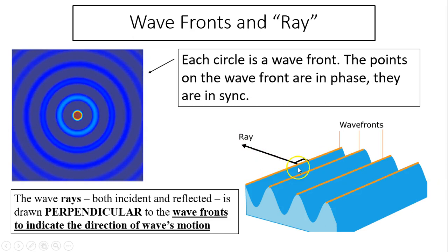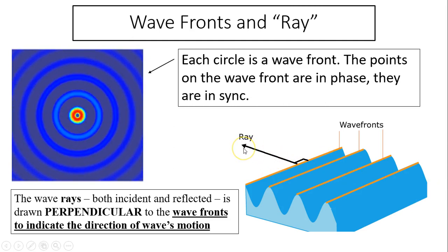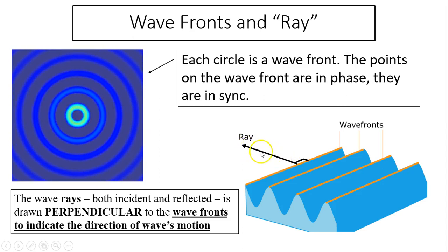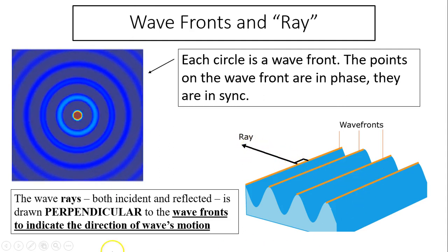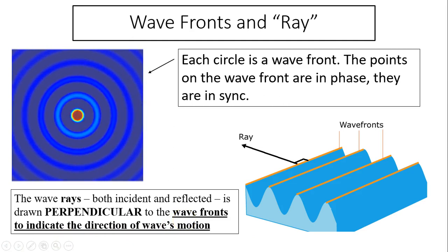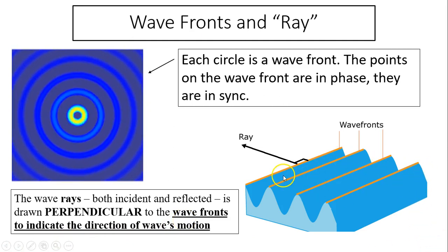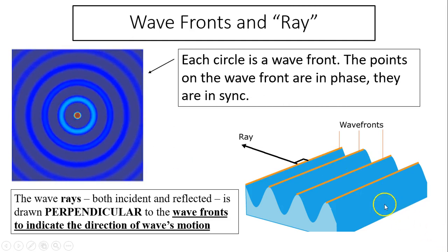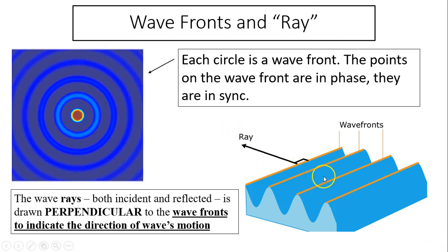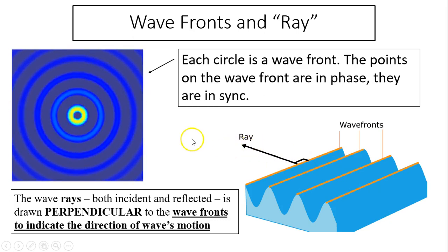Here is another example of wavefronts. The wave is traveling this way — the arrow indicates the direction of the wave's travel. This ray is drawn perpendicular to the wavefronts and indicates the direction of the wave's travel. So this line is also called a wavefront. If it's not circular, it's just a ray going straight, and the line perpendicular to all the wavefronts is called the ray.